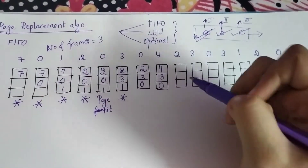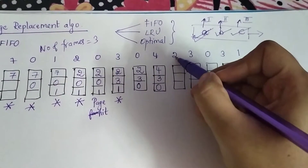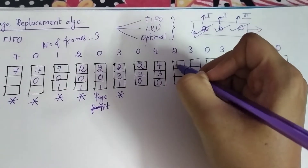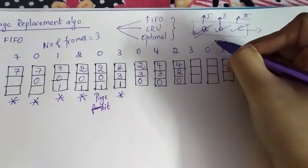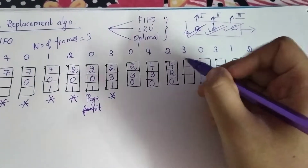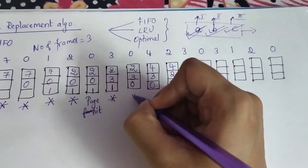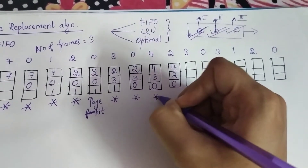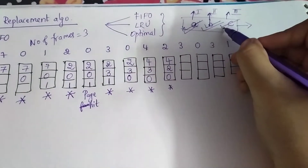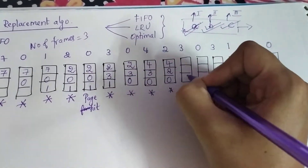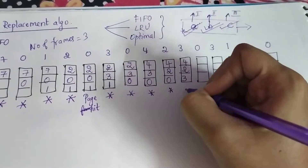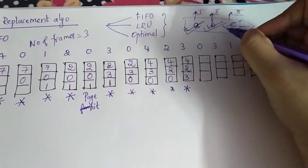You now have two tick marks because you completed the first cell. Next you have two — add it to the second position, giving four, two, zero. This is also done with two ticks. Now you have three, and all of these are page faults. You add three to the third cell, replacing zero, so two and four remain. This is also a page fault.